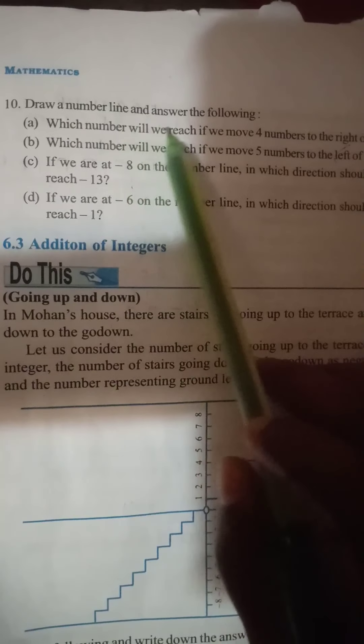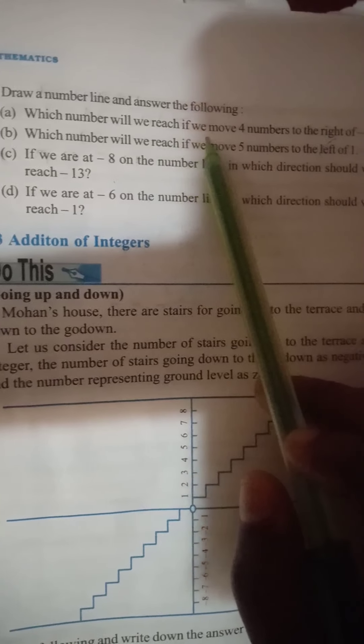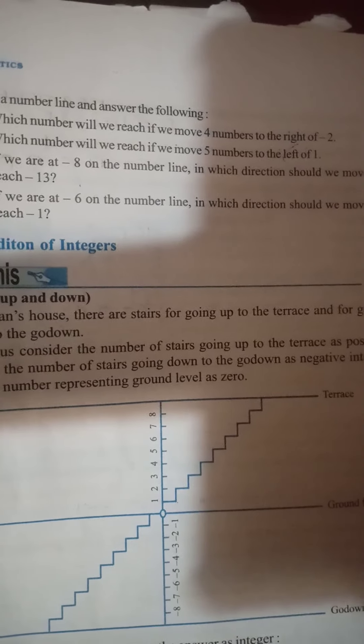Question 10: draw a number line and answer the following. Which number will we reach if we move four numbers to the right of minus 2? Starting at minus 2 and moving four steps to the right — one, two, three, four — we reach plus 2. The answer is plus 2.